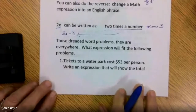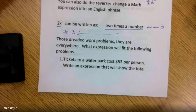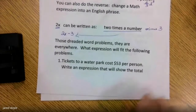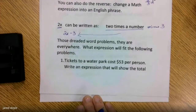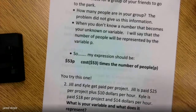We all know that every unit has word problems, and I know you dread these. But read the problem — not once, not twice, three times. And then when it starts to make some sense to you, start putting your terms and your numbers together. So here is a problem: 'Tickets to the water park cost $53 per person. Write an expression that shows the total cost of tickets for a group of friends.'